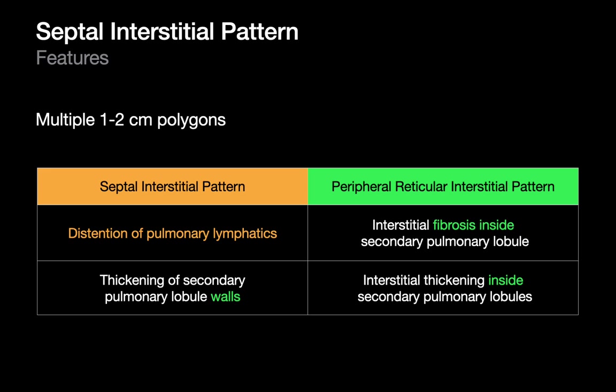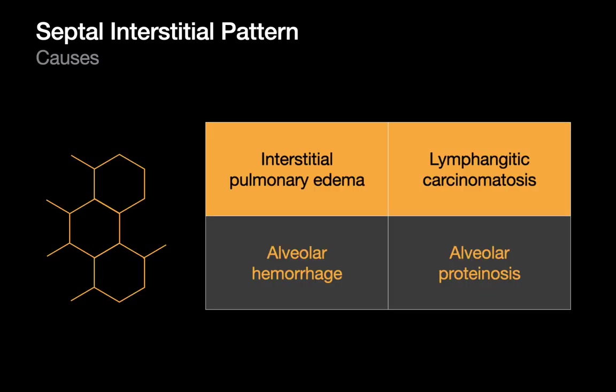Distinguishing septal from reticular interstitial pattern should not be too tough, as the pathophysiology is different. There are four common causes of a septal interstitial pattern. The two most important are interstitial pulmonary edema and lymphangitic carcinomatosis. The other two — alveolar hemorrhage and alveolar proteinosis — cause a septal interstitial pattern but also other more pronounced findings like ground glass opacity and consolidation that guide interpretation. Interstitial edema and lymphangitic carcinomatosis can sometimes present with just a septal interstitial pattern by itself, which is why those two diagnoses deserve special focus.